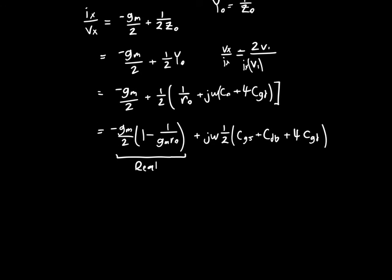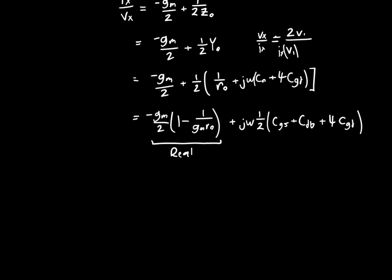So this is interesting because it's the same exact result that we had before in terms of the real part. So the real part is unchanged. And if we're trying to design a model of what this thing looks like, it's got a negative real resistance in parallel with a regular old capacitor. And the resistance value is GM over 2 times 1 minus 1 over GMRO. And we do have to be careful that GMRO is greater than 1 so that the input admittance is actually negative. And the capacitance is just 1 half CGS plus CDB plus 4CGD.